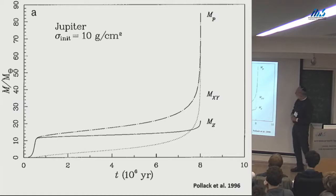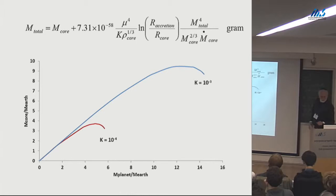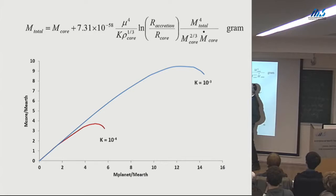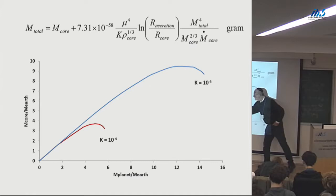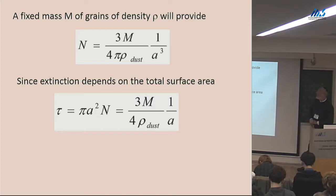How can you reduce this time? If you look at this equation again, one way of reducing the critical core mass — having this collapse occur earlier — is to reduce the opacity. Here's what happens if you have an opacity of 10 to the minus 3, or 10 to the minus 4. If you could somehow do that, you would really gain and speed things up.